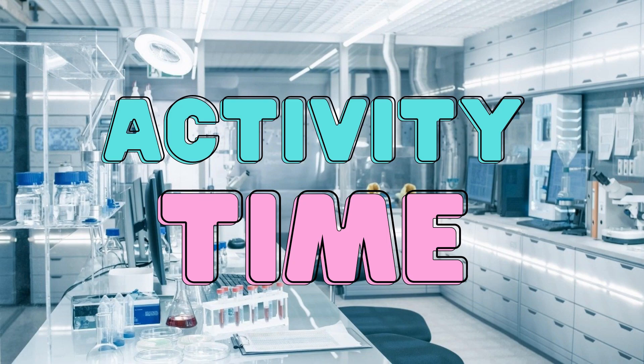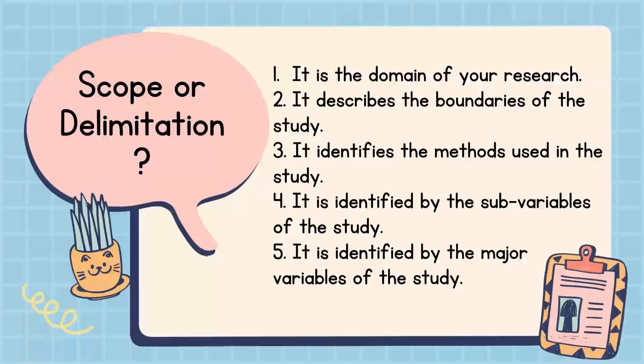Before we proceed to our lesson proper, let's have an activity. Tell whether the given statement is a scope or a delimitation. Number one: it is the domain of your research. Number two: it describes the boundaries of the study. Number three: it identifies the methods used in the study. Number four: it is identified by the sub-variables of the study. Number five: it is identified by the major variables of the study. You have 30 seconds to answer the five questions. Are you ready?